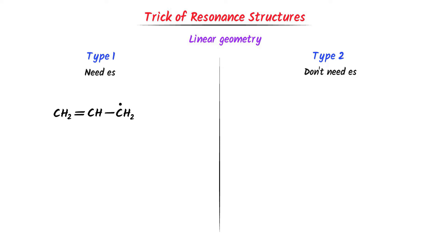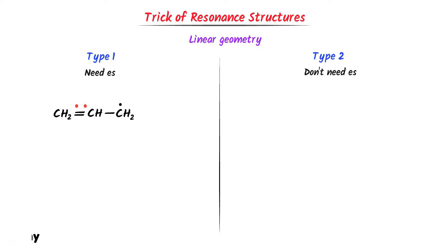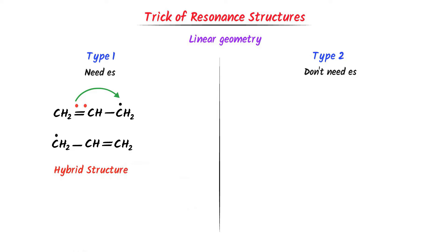Consider this molecule. This dot means free radical — this carbon has one electron and needs one more. There are pi electrons present here. So this electron will shift here, giving this new structure. One electron remains on the first carbon, represented as a dot or free radical. For the hybrid structure, I write CH2 single bond CH single bond CH2. The double bond may be here or here. The free radical may be here or here. These are the two resonance structures of this molecule.